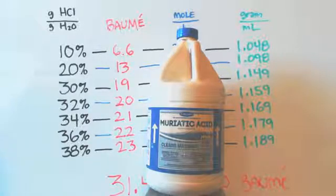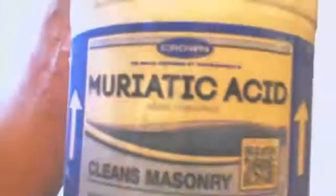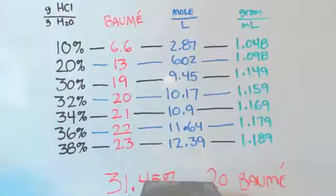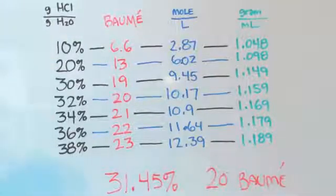I'm going to try and get some easy ones up here. As you can see, this cleans masonry, so it's got 31.45 percent. I want to show you something about hydrochloric acid.